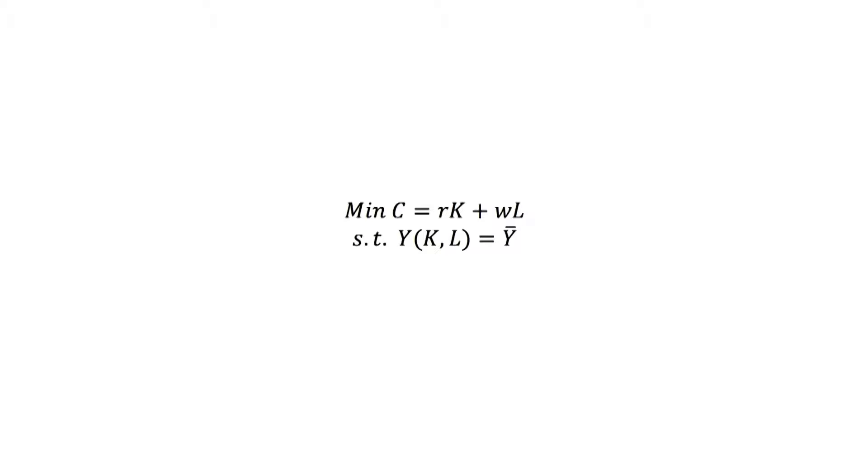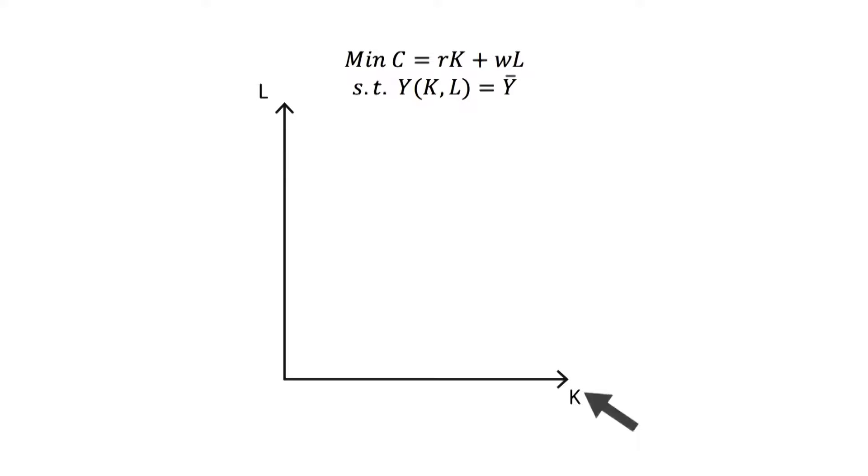This second formula is commonly used in order to facilitate its graphical representation. The x-axis, or horizontal axis, shows the amount of capital used in the production process, while the y-axis, or vertical axis, shows the amount of labor needed.